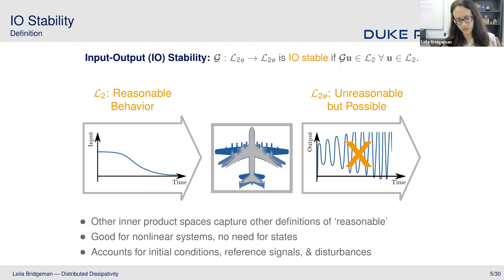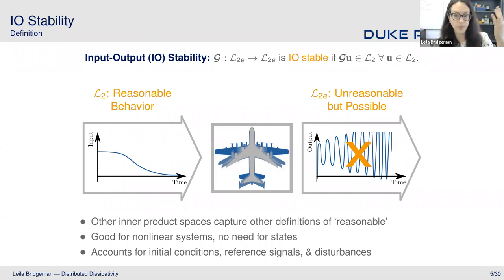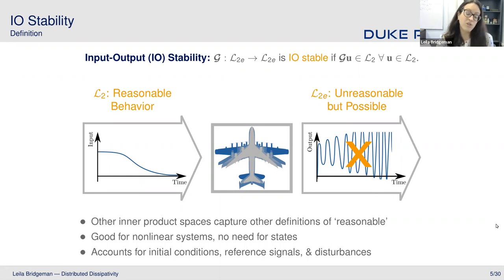Our set of unreasonable but possible outcomes is L2e, which encompasses signals that are square integrable over finite time but may not be square integrable over infinite time. L2e can include exponential growth, growing oscillations, oscillations that continue in perpetuity — all kinds of nefarious responses we're concerned about. Input-output stability can be defined more generally with different inner product spaces customized to the definition of 'reasonable' that works for your application.